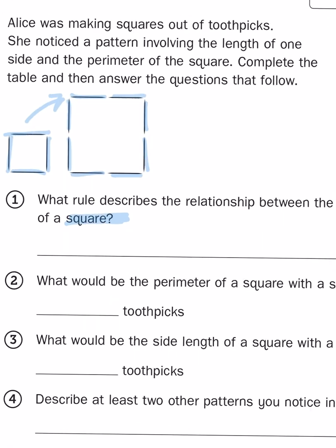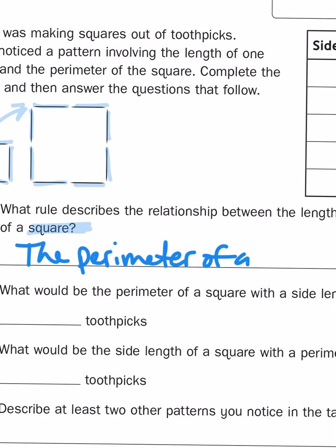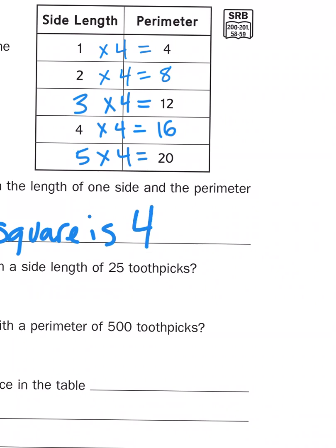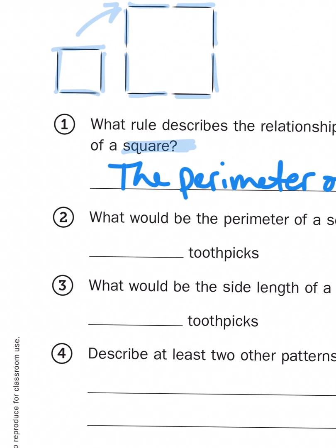To put that is the perimeter of a square is four times the length of a side. I'm running out of room here.